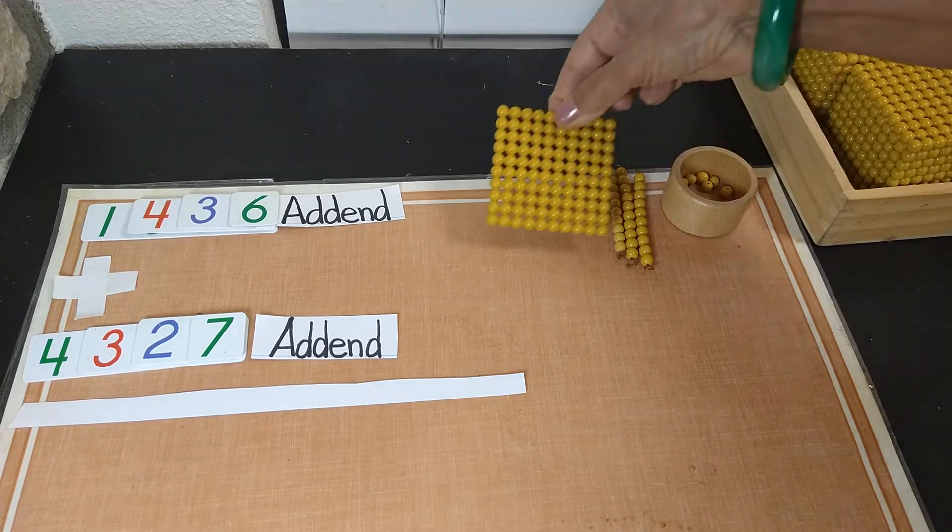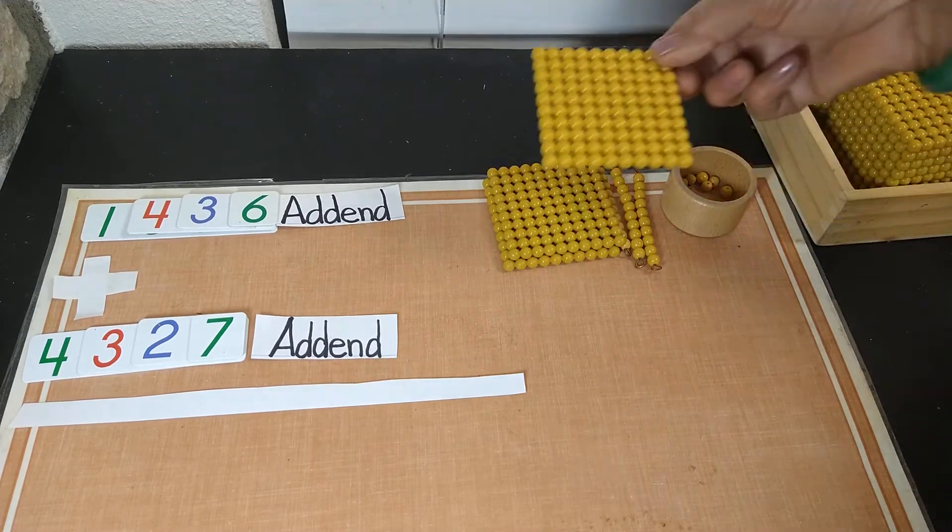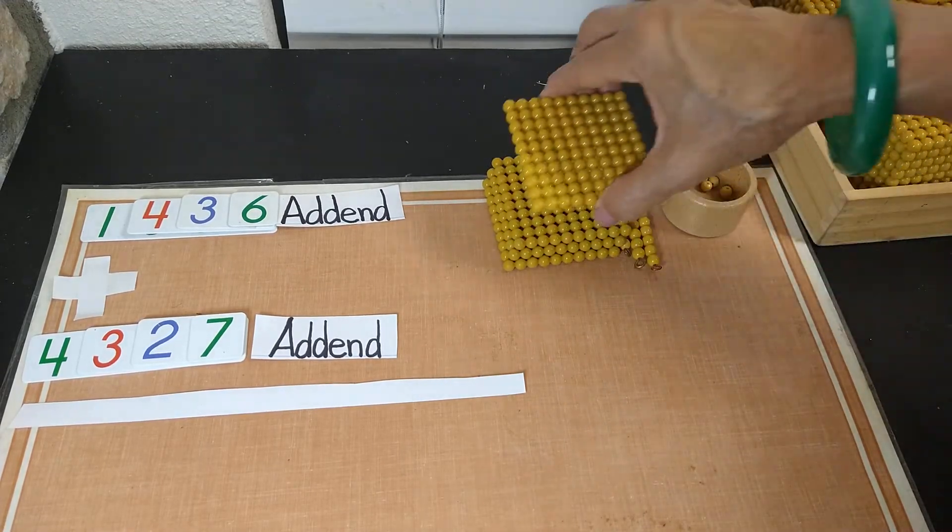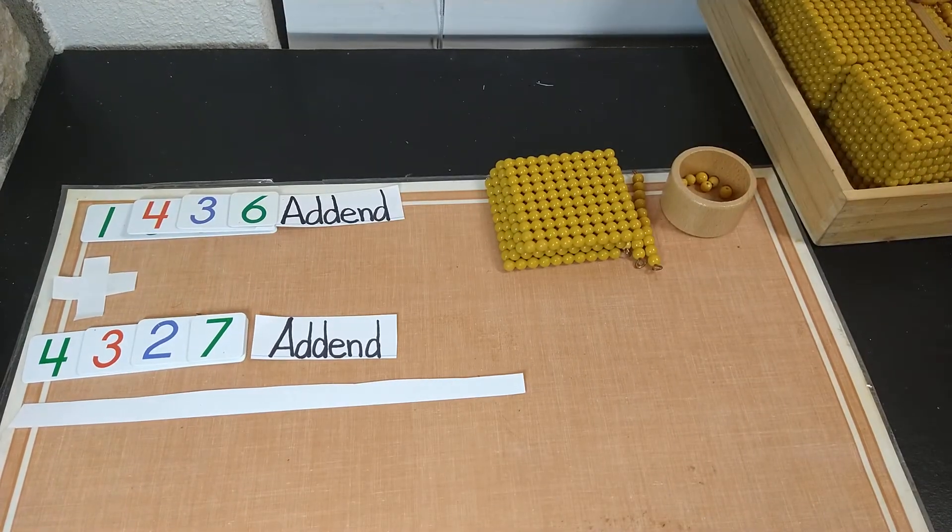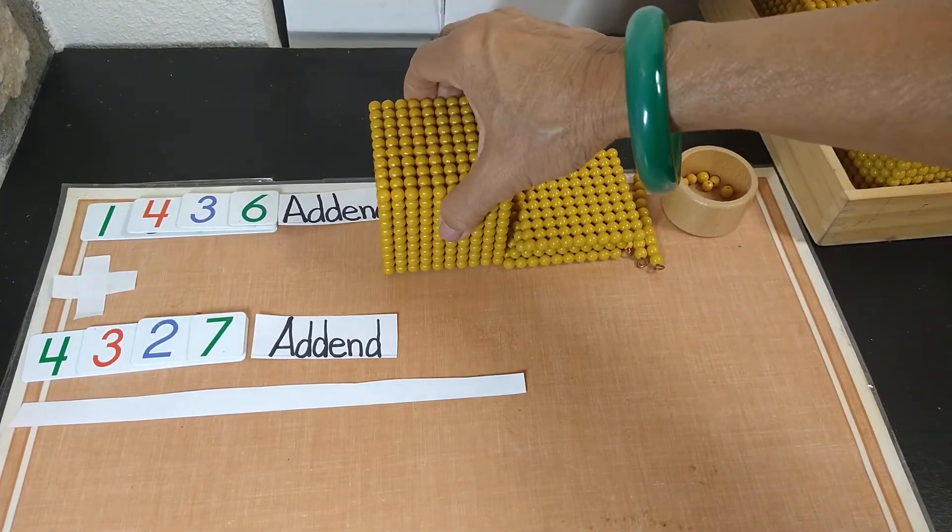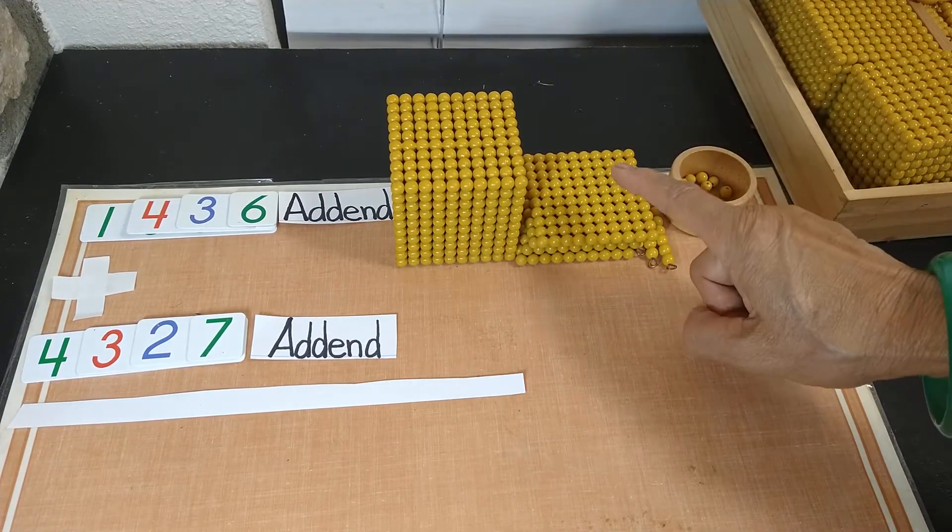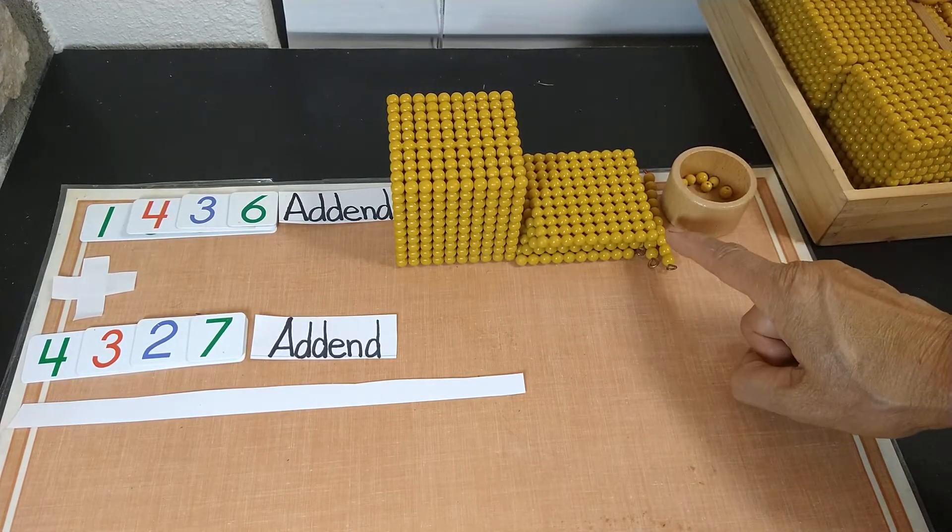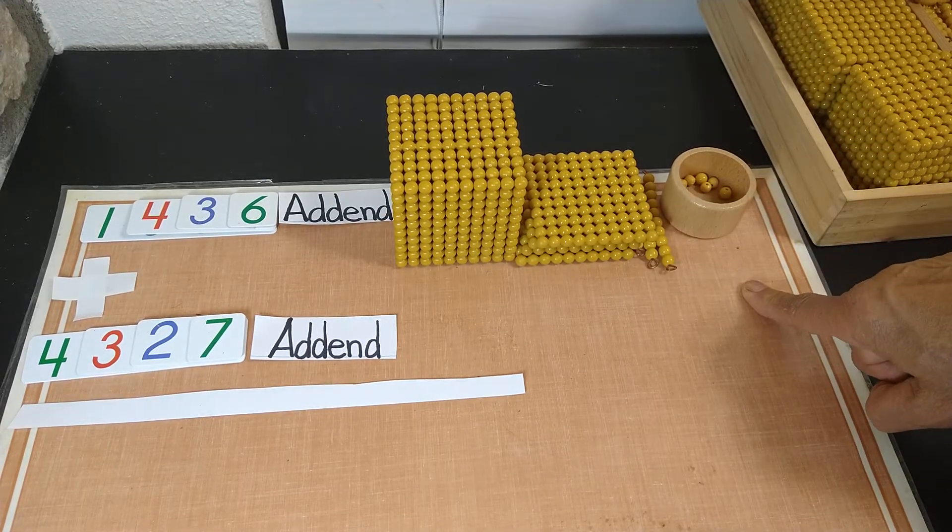1 hundreds. 2 hundreds. 3 hundreds. And 4 hundreds. How many thousand? 1,000. So now we got 1,436. That is our first addend.